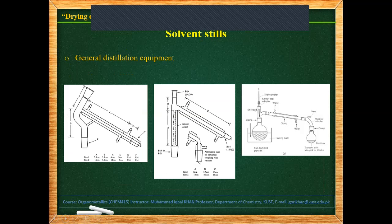Then we have the solvent stills. There are different types of solvent stills with different neck sizes and lengths, and different types of condensers and vacuum jackets. Here is the complete assemblage for the drying of solvents by wire distillation.